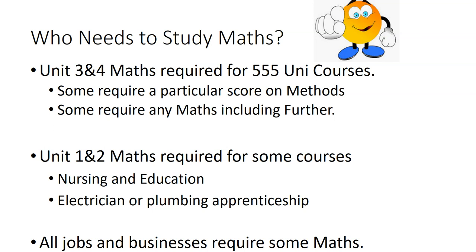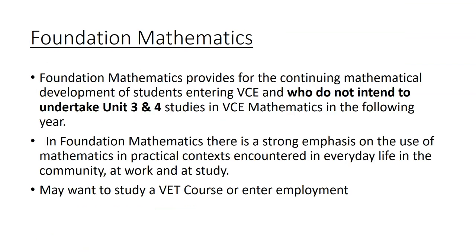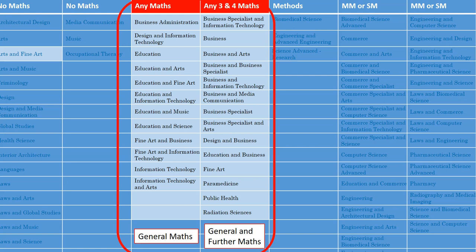So which maths should you study? The first option is Foundation Mathematics. It's an option to study to have a VCE Mathematics class. Here are some of the courses that require General Mathematics and or Further Mathematics. You'd want to be getting at least a C in Year 9 or Year 10 maths to do these subjects.